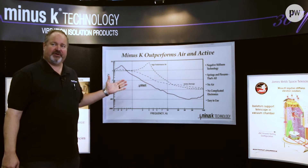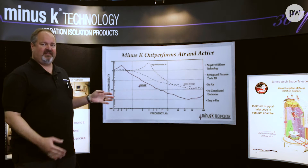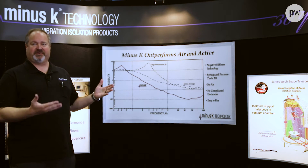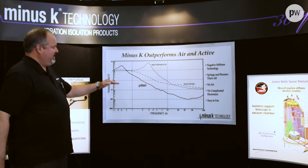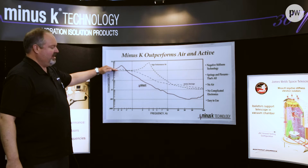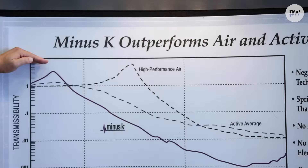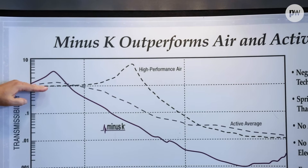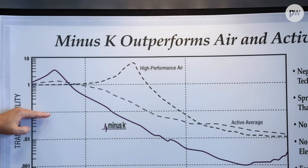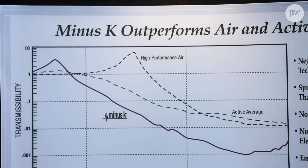This is our transmissibility curve. This explains how isolators work. Everything above the line of one is amplified, and everything below the line of one is attenuated.